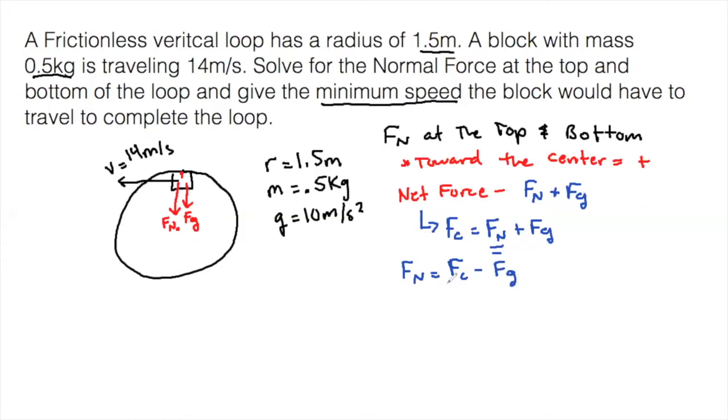Then I will sub in my knowns and my givens for these particular items. I know that FC is equal to MV squared over R. And I know that FG is equal to MG. So now when I substitute in, and I'm going to list my units because that's proper practice, 0.5 kilograms times 14 meters per second squared. Don't forget this square that happens all the time. Divided by R, 1.5 meters, and that's going to be minus 0.5 kilograms times 10 meters per second squared.